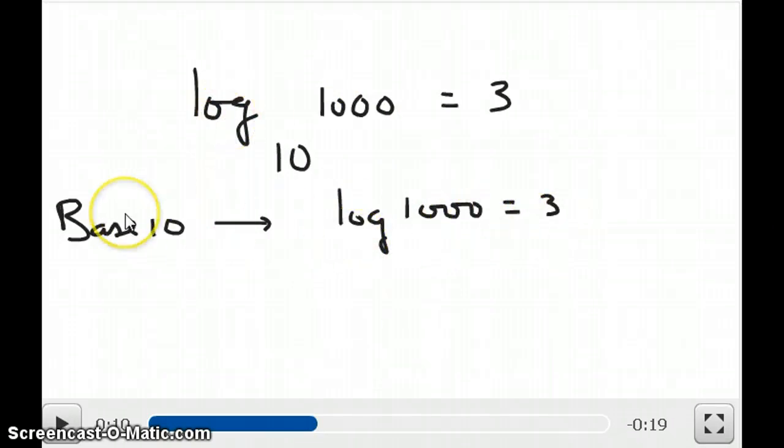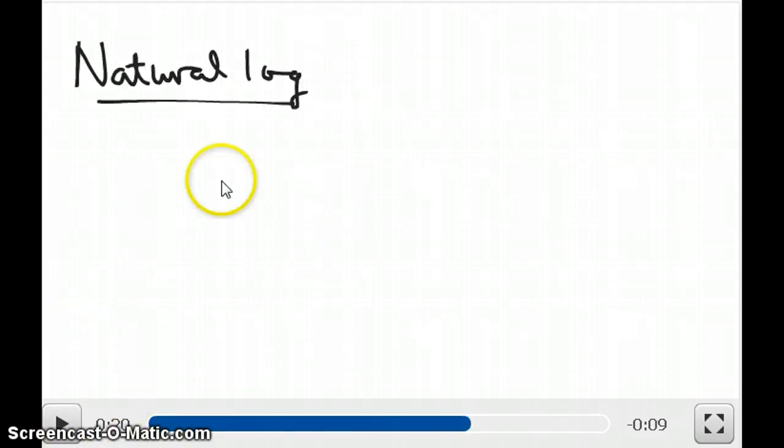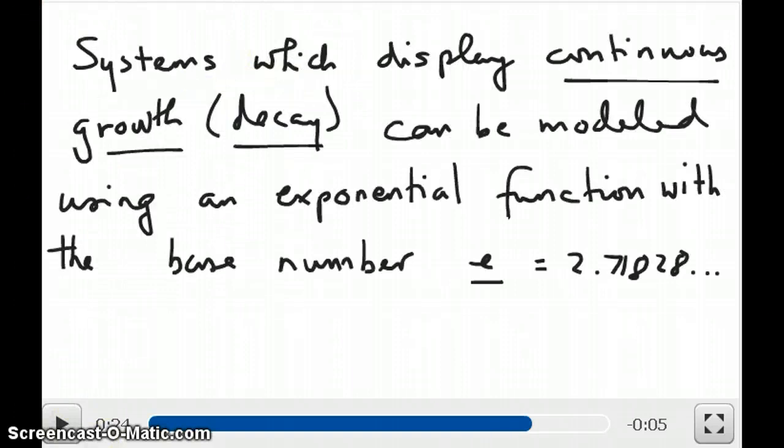Log base 10 is not that important in chemistry. A more important log function in the sciences is called the natural log. What are natural logs? It turns out that if we look at continuous growth rates of natural systems, their growth rates follow an exponential function where the base number of that exponential function is a number called e, which is equal to 2.71828 and more decimals can be given here depending on how accurate you want that number to be.